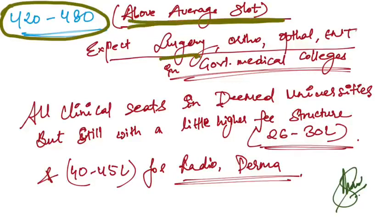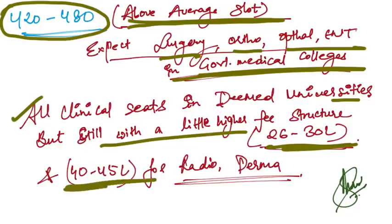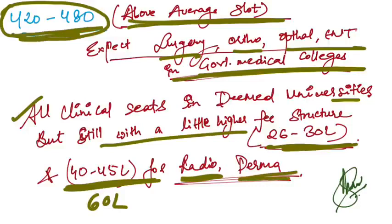For 420 to 480, this is a little above average slot. You can expect surgery, ortho, ophthalmology, and ENT in government medical colleges and all clinical seats in deemed universities but with high fee structure like 26 to 30 lakhs, and around 40 to 55 or 60 lakhs sometimes for radio diagnosis and derma seats.